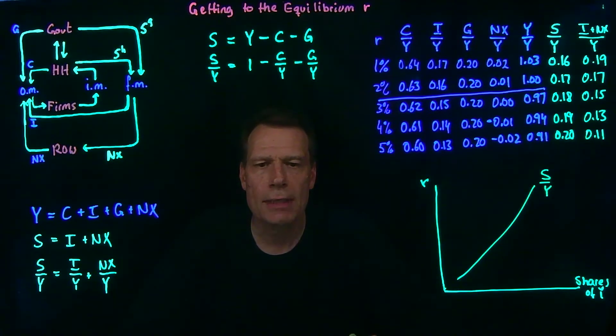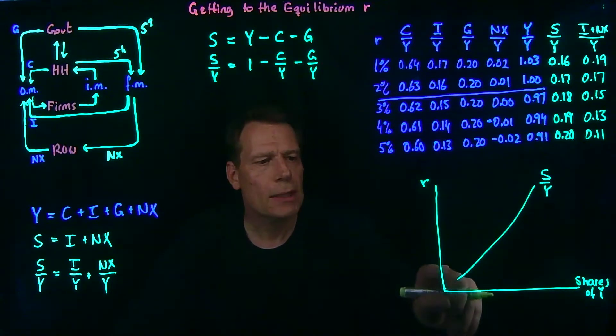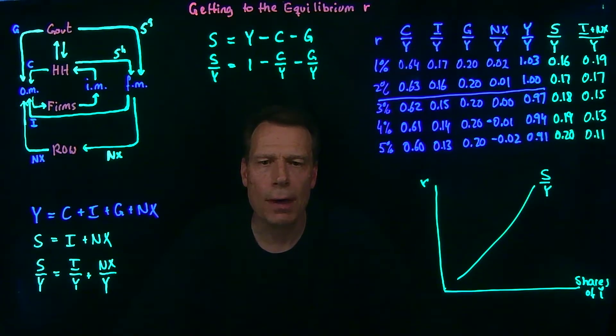An upward sloping curve that says savings as a share of GDP increases as the real interest rate rises, which makes sense. As the real interest rate rises, savings pay off more. So we'd expect the share of GDP that goes to savings to go up.